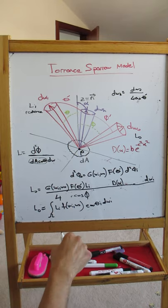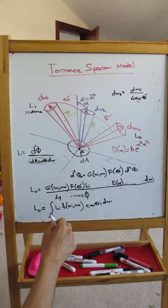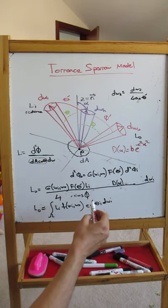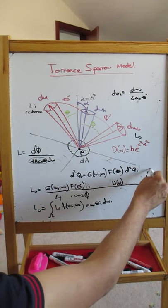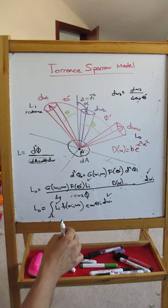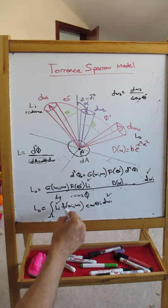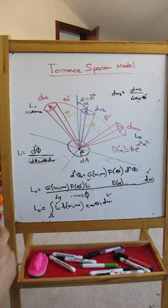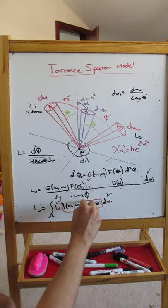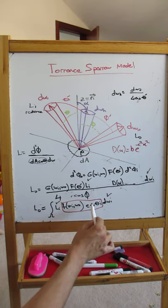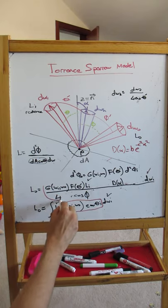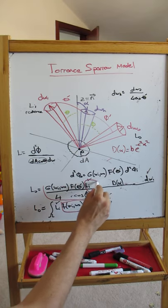Now if you look at the similarity between these terms here, from here you can compute F. So here we have DWi here and Li here - Li here, DWi here. When we take F, which is the BRDF, and multiply it with cosine theta I, we must obtain basically the following.